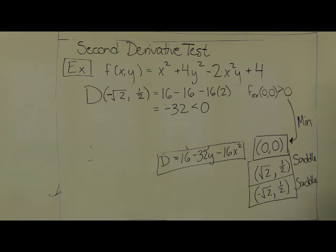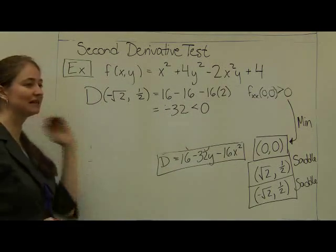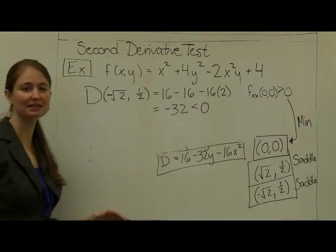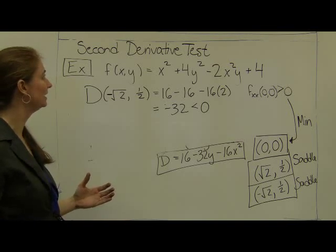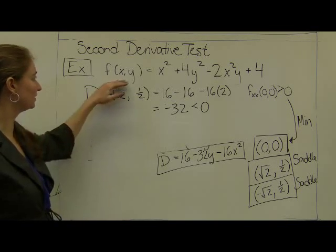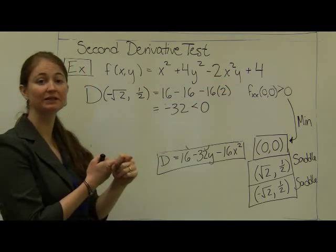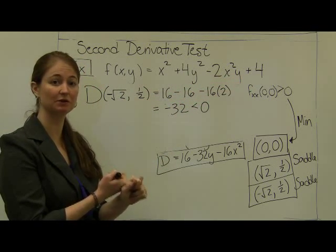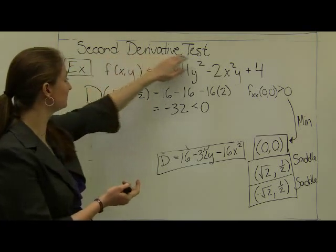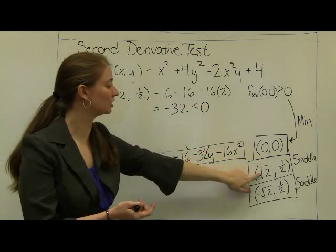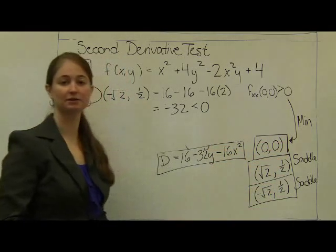This algebraic process isn't that complicated — it's just a little tedious. To summarize: we started with the function, first found the critical points by setting the partial derivatives equal to zero, then used the second derivative test to determine whether each critical point was a maximum, minimum, or saddle point.